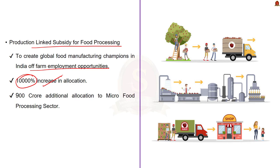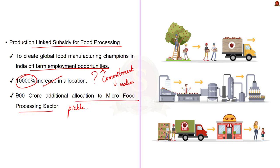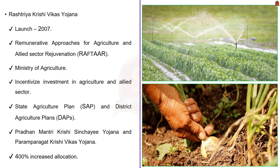In case of the Production-Linked Incentive scheme for food processing — the scheme that aims to create global food manufacturing champions in India and off-farm employment opportunities — the budgetary allocation increased from 10 crore last year to 1022 crore this year, a 10,000% increase. This shows the government's commitment to increasing off-farm employment and making value addition in agricultural products a priority. In addition, for the micro food processing sector — enterprises such as pickle and jaggery making — there is an additional 900 crore allocation compared to last year.